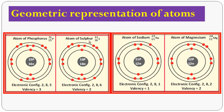For sulfur, atomic number 16, electronic configuration: 2, 8, 6. First shell contains 2 electrons, next shell 8 electrons, and the outermost shell contains 6 electrons. Valency = 8 minus 6 = 2. So the valency of sulfur is 2. For sodium, atomic number 11, electronic configuration: 2, 8, 1. First shell 2 electrons, second shell 8 electrons, outer shell 1 electron. So sodium has valency 1.